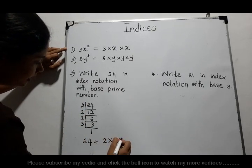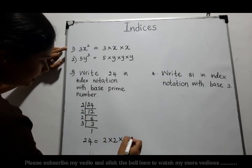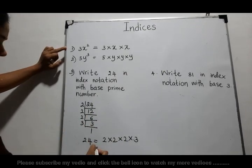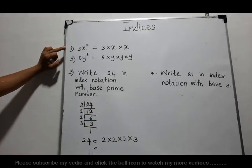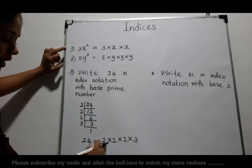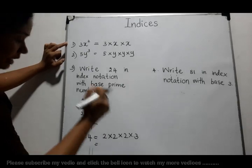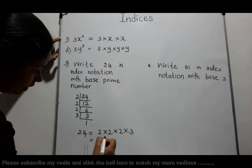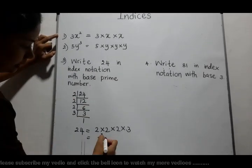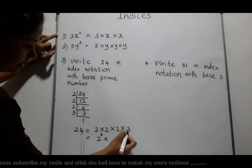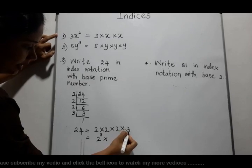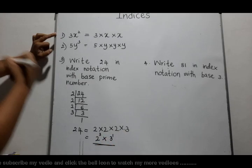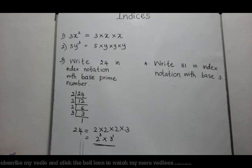Now we can write 24 as the product 2 into 2 into 2 into 3. In index notation, since 2 is multiplied 3 times, we write 2 to the power 3 into 3 to the power 1.